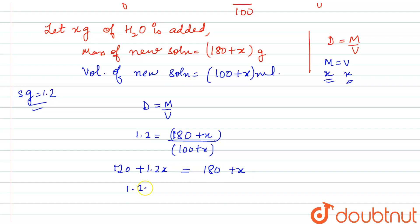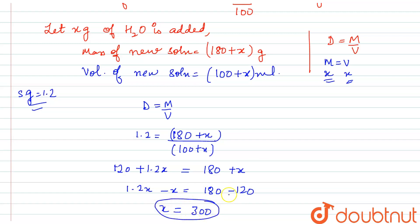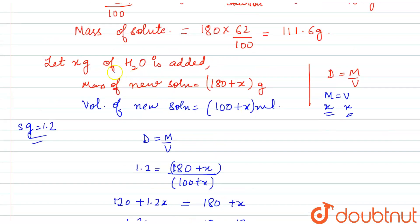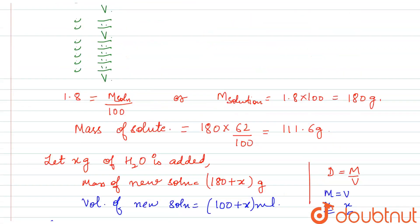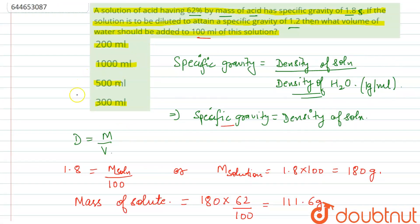Solving: 1.2x − x = 180 − 120, so 0.2x = 60, giving x = 300. Since x represents the volume of water added, the answer is 300 ml. From the given options, 300 ml is the correct answer.